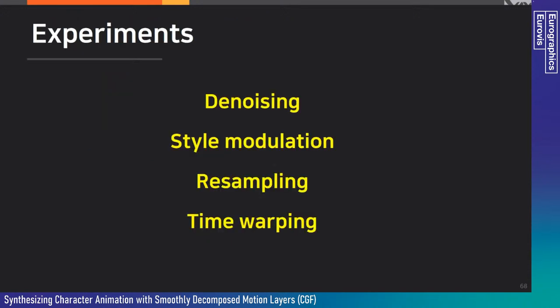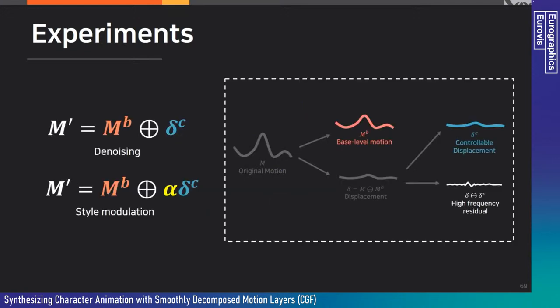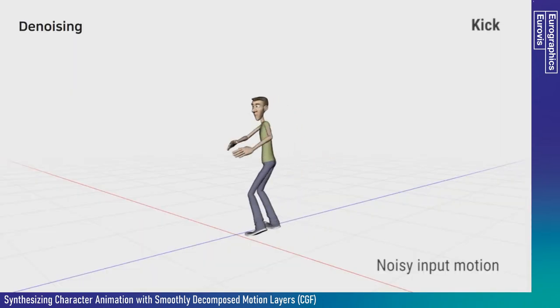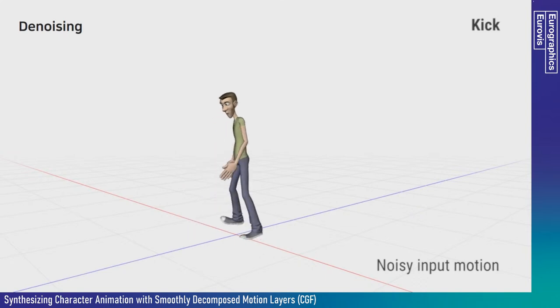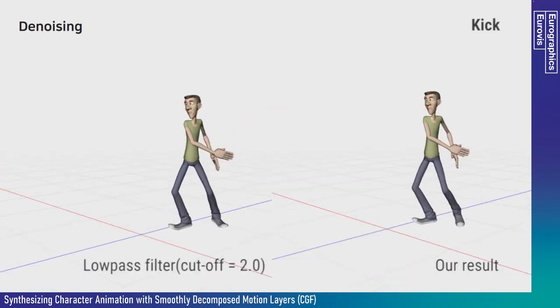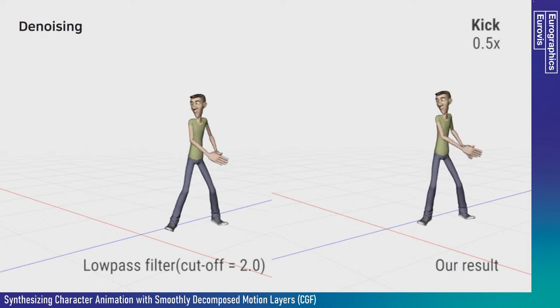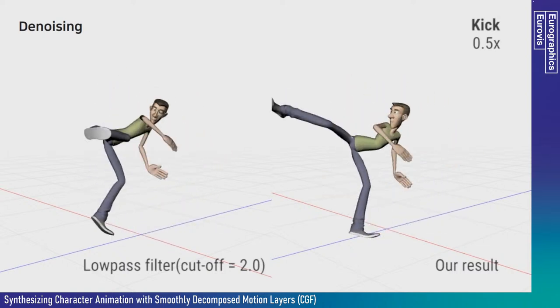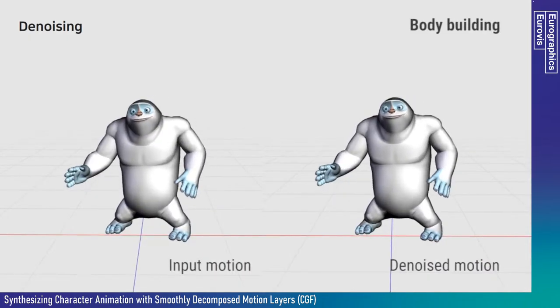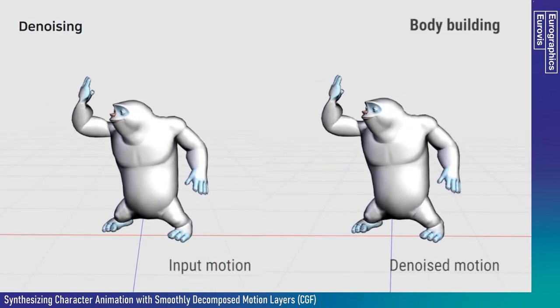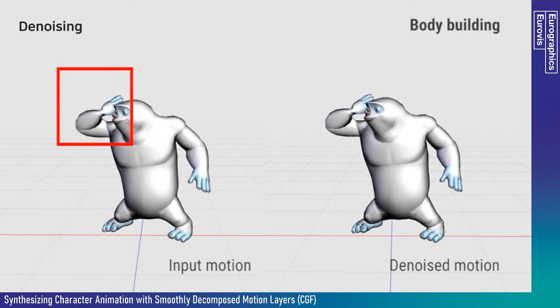For denoising, we remove the residual layer containing unwanted high-frequency noise. Style modulation is similar but we scale the controllable displacement by alpha. We corrupted input motion by adding Gaussian noise to each joint channel, and achieved denoising by simply removing the high-frequency residual displacements. Our results generally have smoother motion than a low-pass filter. Video examples show that unwanted high-frequency noise is successfully removed.